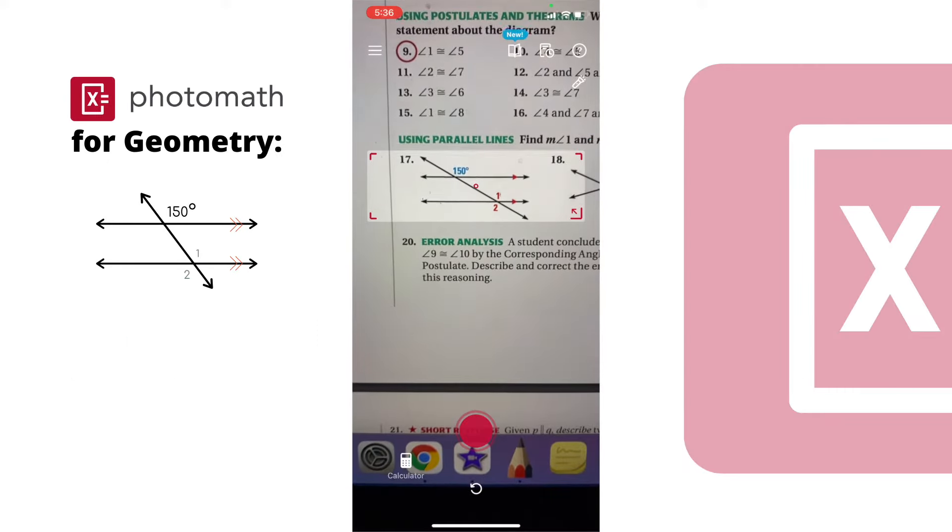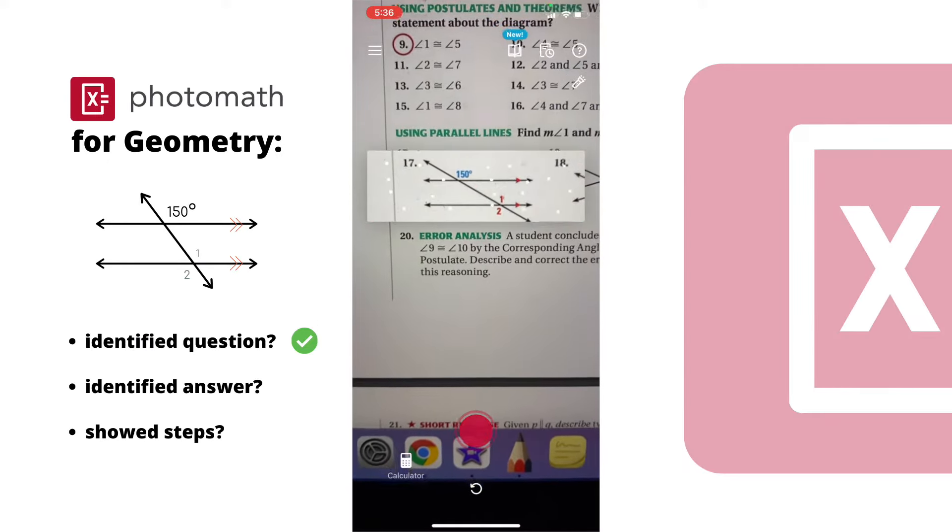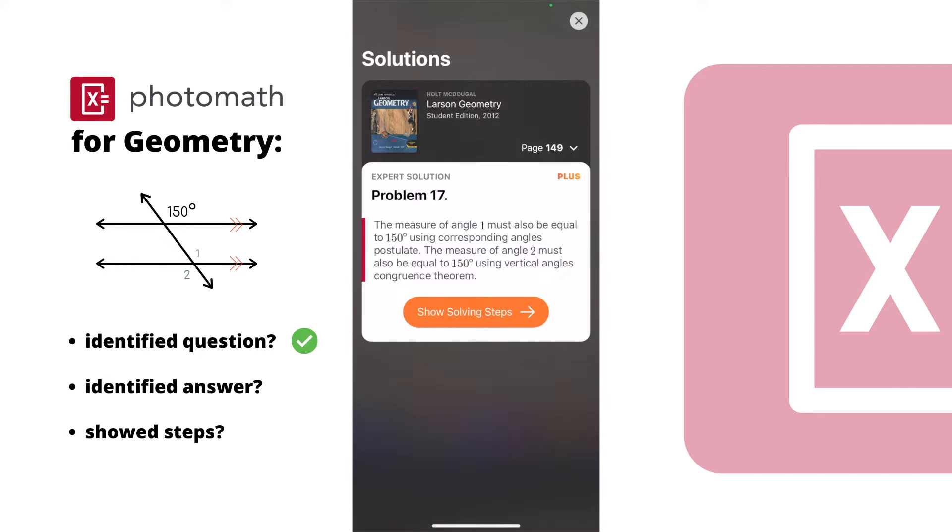For geometry, Photomath actually recognized the exact problem in my textbook again. It tells you the answer, but I'm not sure if this is just the same answer that comes with the textbook, but it perfectly explains the angle pair relationship you have to use to find both the angles 1 and 2.